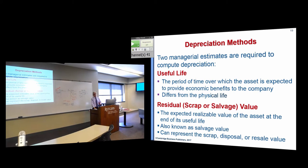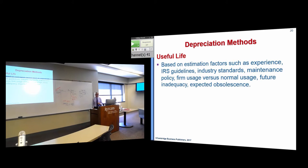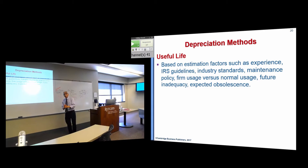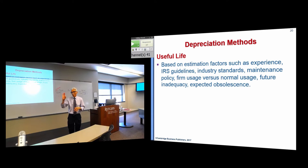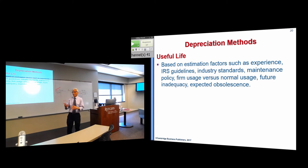How do we estimate the useful life? There's no GAAP standard. The useful life is generally based on factors like your experience using the asset and guidelines from the IRS. The IRS has tables — for a building, the recommendation might be 30 years; automobiles, three years; machinery, five years. You can find IRS guidelines for different asset classes, plus industry standards based on your maintenance policy.